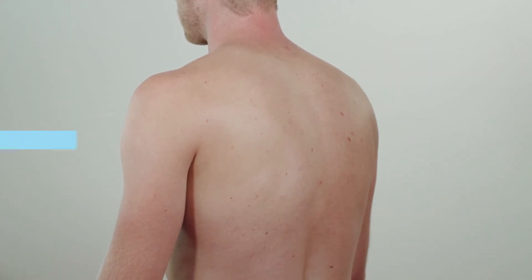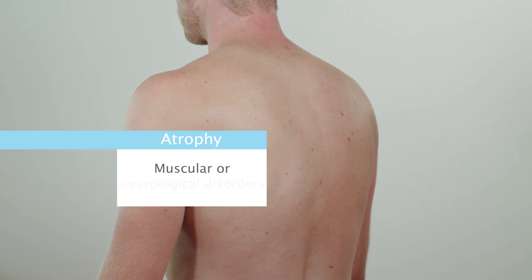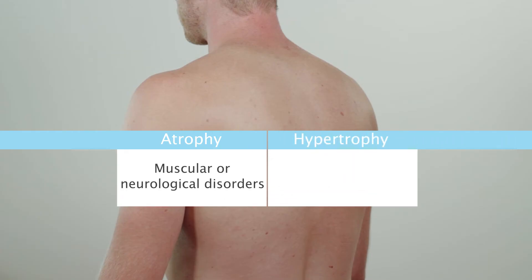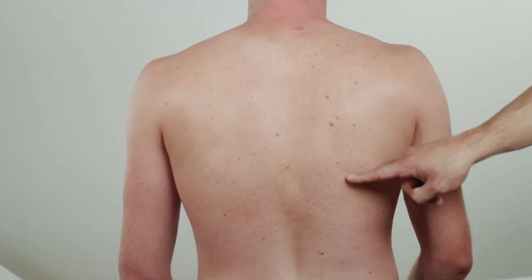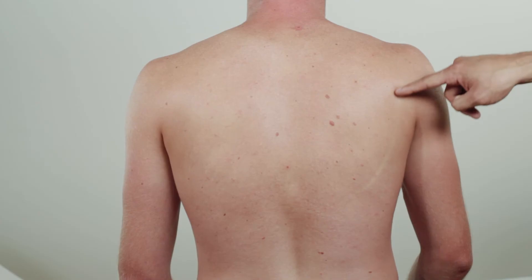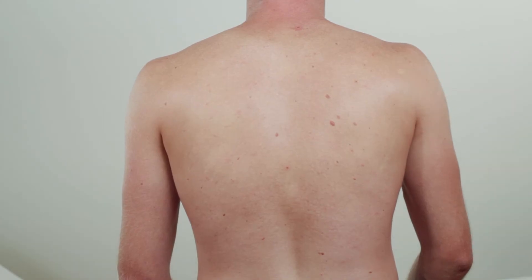Any sign of atrophy should be noted, since it can hint at an underlying disease affecting either the muscles or the nerves. Inspection may also reveal hypertrophy as a sign of overuse. Inspection of the scapula can be facilitated by palpating its outline. This patient's scapula is unremarkable and does not protrude from the back as seen in winged scapula, also called scapula alata.